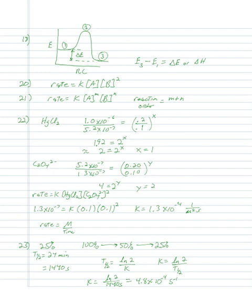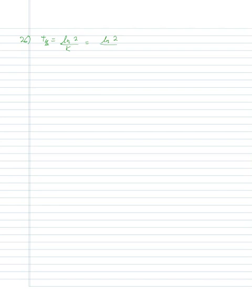Number twenty-six: find the half-life for a first-order reaction with k = 4.2×10⁻⁴ s⁻¹. Using t½ = ln2/k = ln2 ÷ (4.2×10⁻⁴ s⁻¹), we get a half-life of 1650 seconds, or approximately 1.7×10³ seconds.